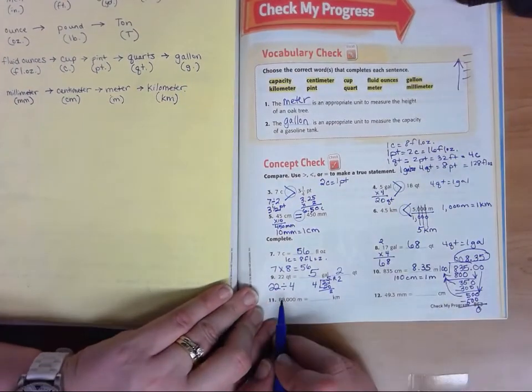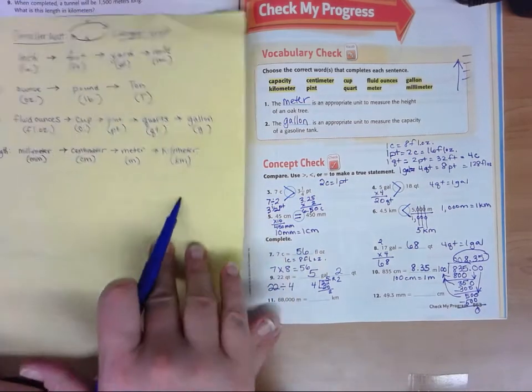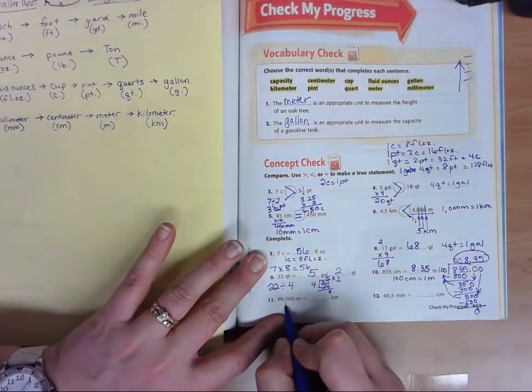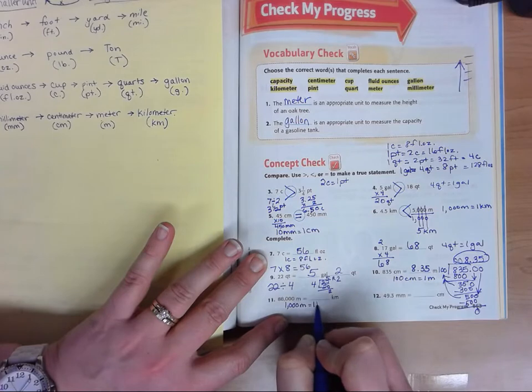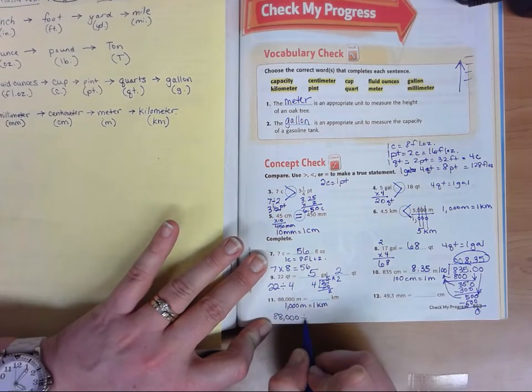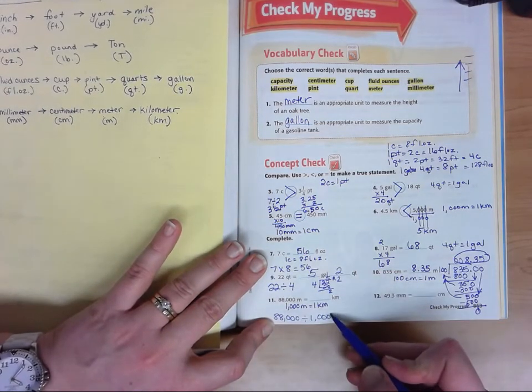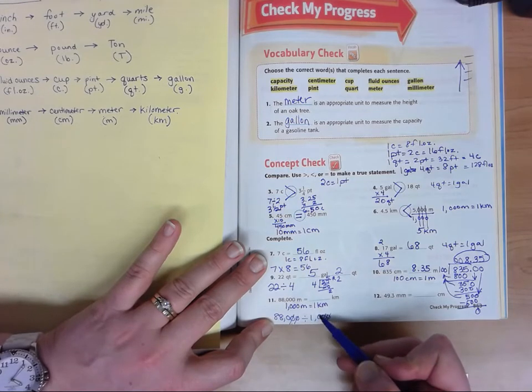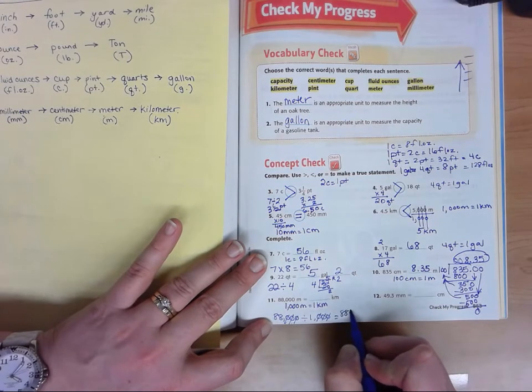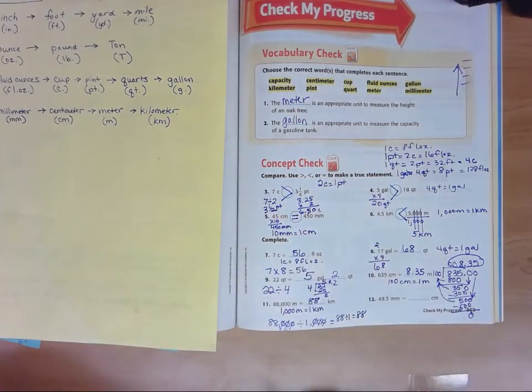88,000 meters to kilometers. So meters to kilometers, I'm going to divide. So we know that there's 1000 meters in one kilometer. So I'm going to take 88,000 and divide by 1000. Remember when you divide, you can cancel out zeros. So cancel one from here and here, there and there and there and there. Three zeros to cancel on each side. Now I have 88 divided by one, which is 88. So 88,000 meters is 88 kilometers.